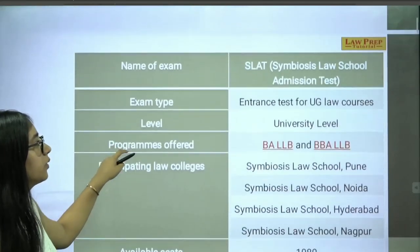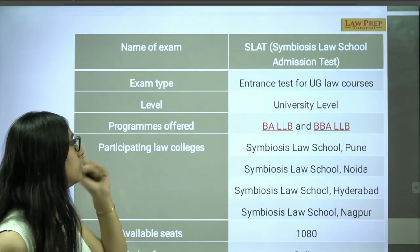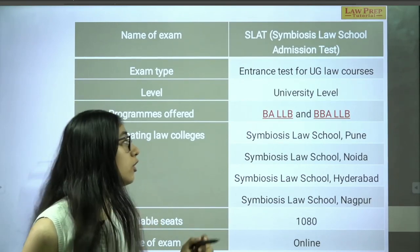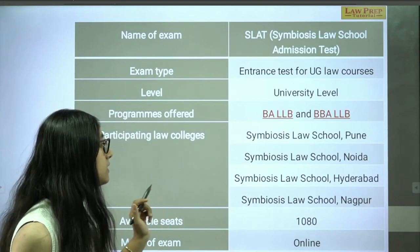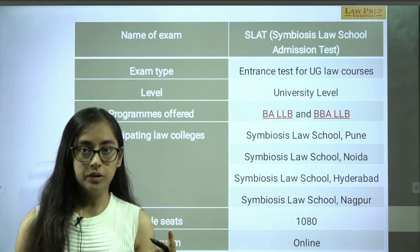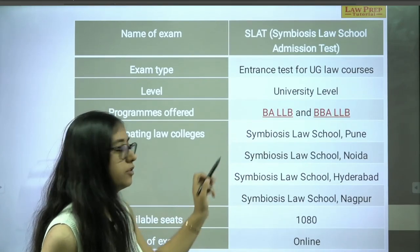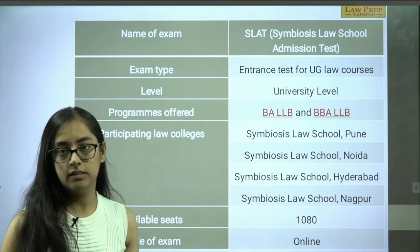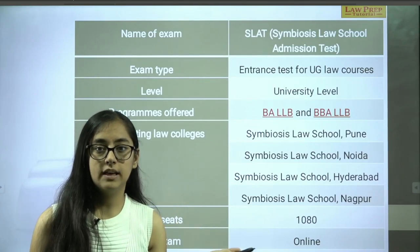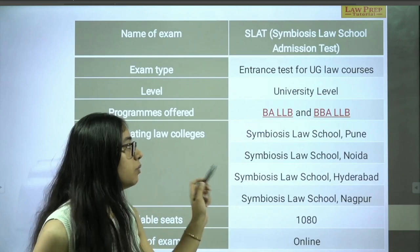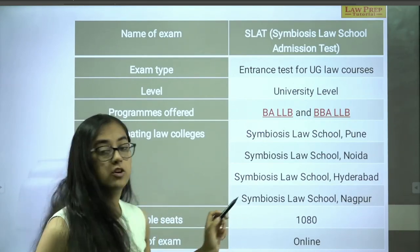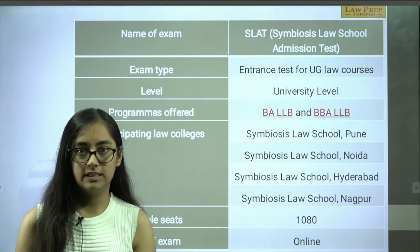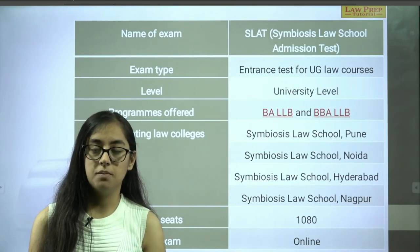The exam is called Symbiosis Law School Admission Test. It offers BA LLB and BBA LLB programs. There are four main campuses for law — in Pune, Noida, Hyderabad, and Nagpur. Pune is regarded as one of the best institutes. Total available seats across all four institutes are 1080, with approximately 180 seats for BA LLB and 120 seats for BBA LLB per institute. The mode of the exam is online — center-based, where you will give your exam on a computer screen.